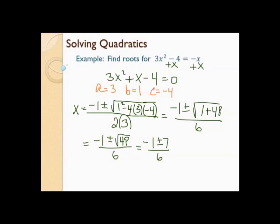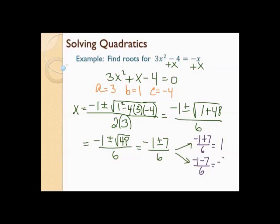Notice the radical has gone away. When the radical goes away, I can actually break this into two fractions and keep simplifying. So I have negative 1 plus 7 over 6, and negative 1 minus 7 over 6. For the first fraction: negative 1 plus 7 is 6, and 6 divided by 6 is 1. For the second: negative 1 minus 7 is negative 8, so negative 8 over 6, which reduces to negative 4 thirds. So my two answers are 1 and negative 4 thirds.